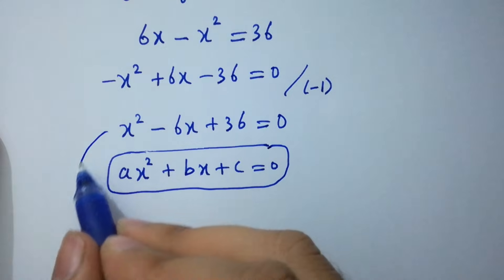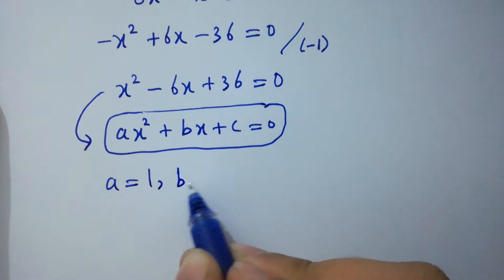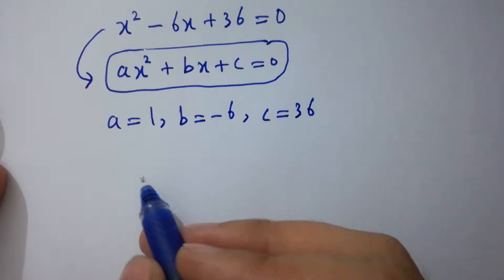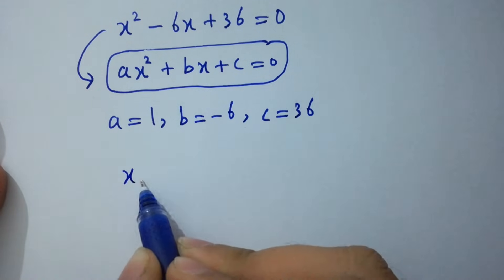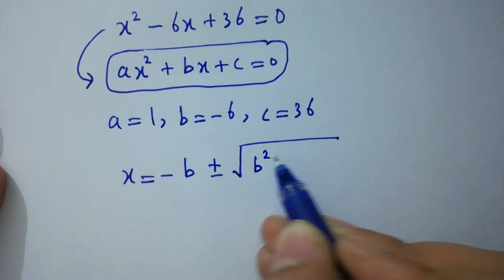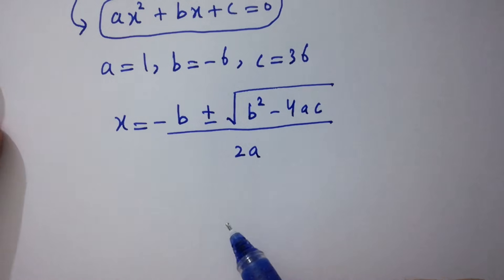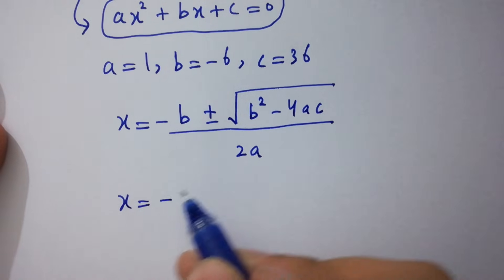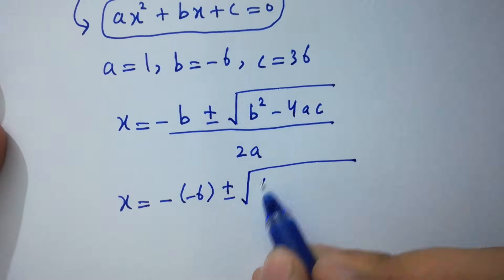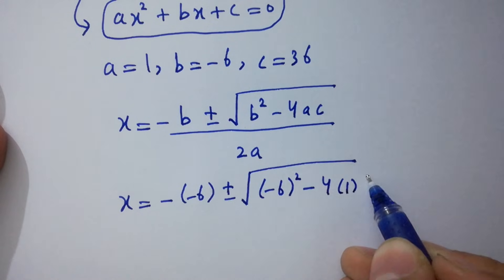By comparing, we have a equals 1, b equals negative 6, and c equals 36. Applying the quadratic formula: x equals negative b plus or minus square root of (b squared minus 4ac), all over 2a. With a equals 1, b equals negative 6, and c equals 36.